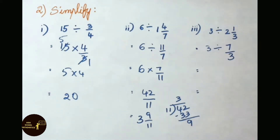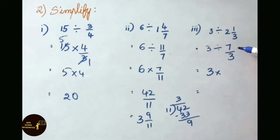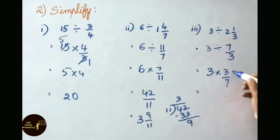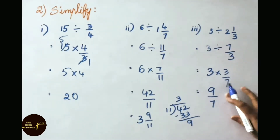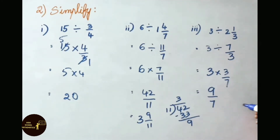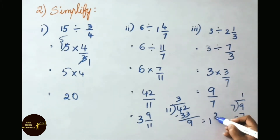3 divided by 7 by 3 — write the reciprocal of 7 by 3, that is 3 by 7. Now multiply the numerators: 3 threes are 9, denominator 7. Let us simplify this by doing the division: 7 ones are 7, remainder 2. So the answer is 1 and 2 by 7.